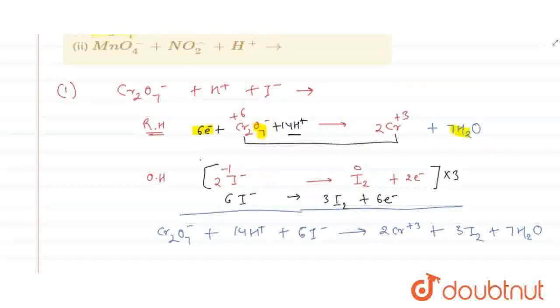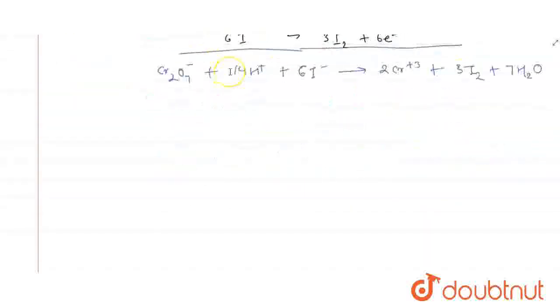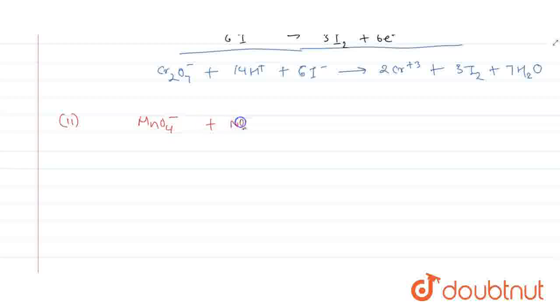Now moving towards the second. In second, we have MnO4- reacting with NO2- in presence of H+. In the same manner we will write the reactions. First, we will write the reaction that is MnO4- reacts with NO2- in presence of H+ to form a product. We will write the first reduction half.